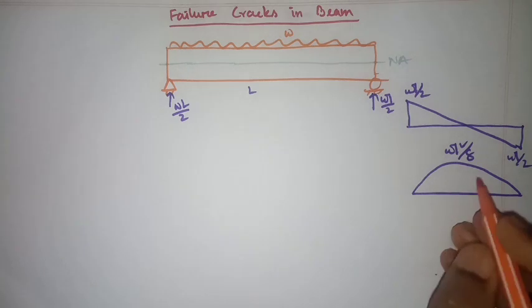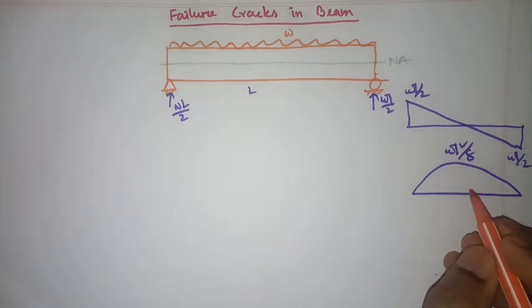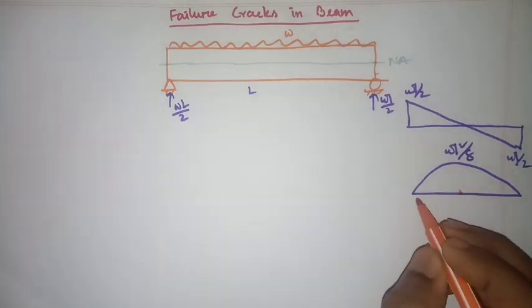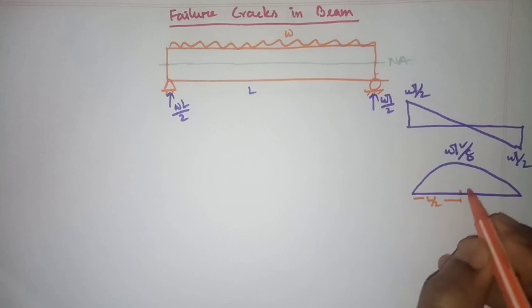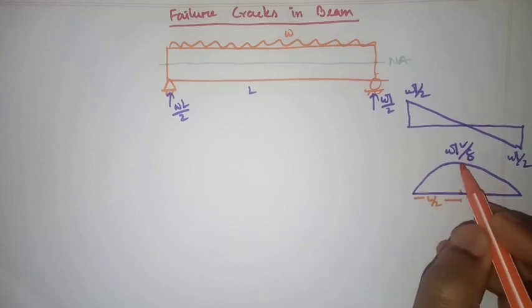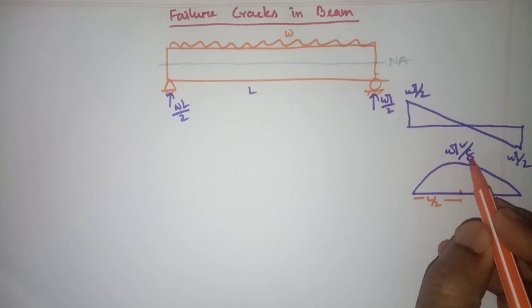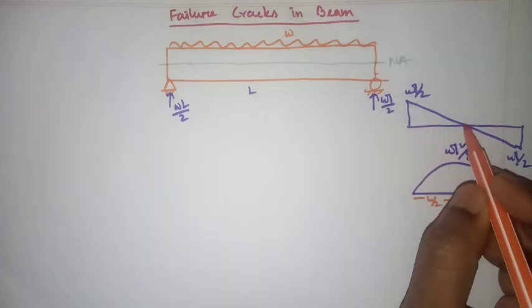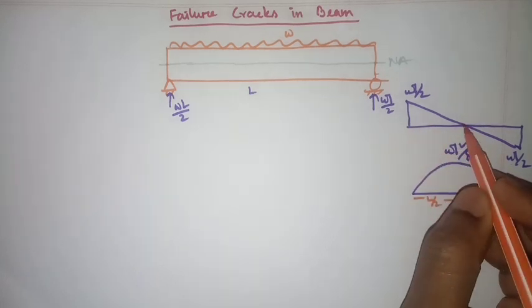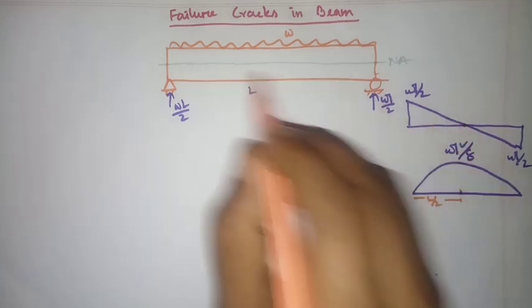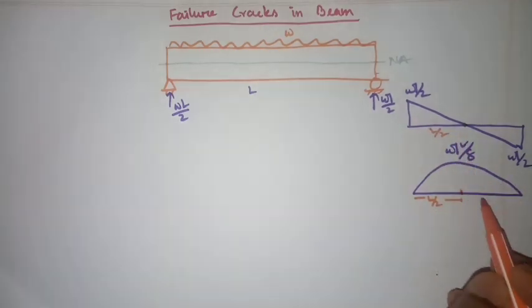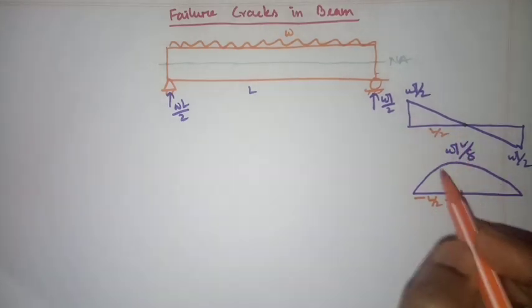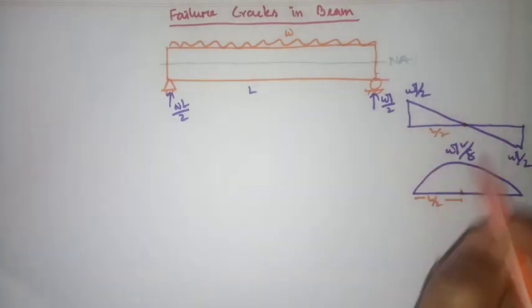The bending moment will be ωL²/8. At the mid-span of this beam — at L/2 distance — the bending moment is maximum at ωL²/8, and shear is zero at the mid-span. Now I will show you the cracks developed for this criteria.